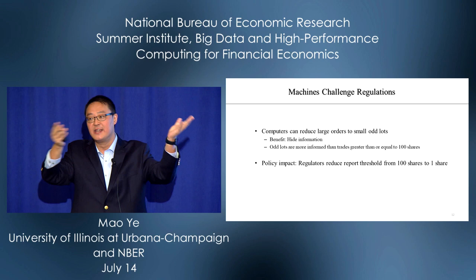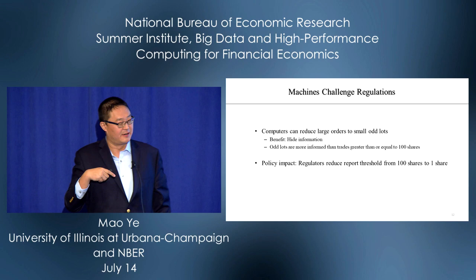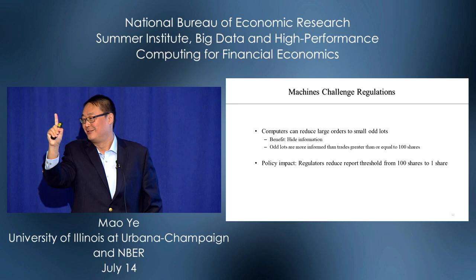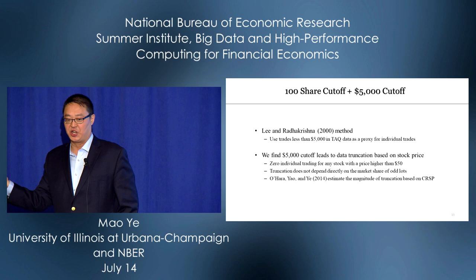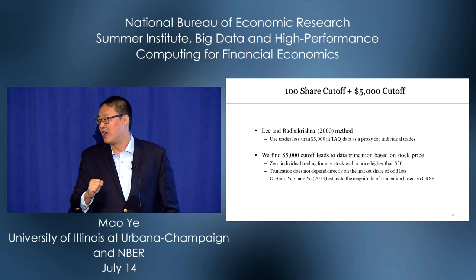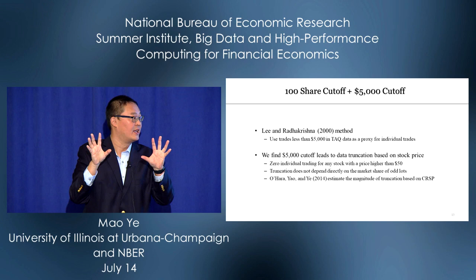This has policy impact — regulators saw our paper and reduced the threshold to one share. But then the question is: even before computers, you can have tiny truncations, and when combined with other truncations, it can be a big deal.